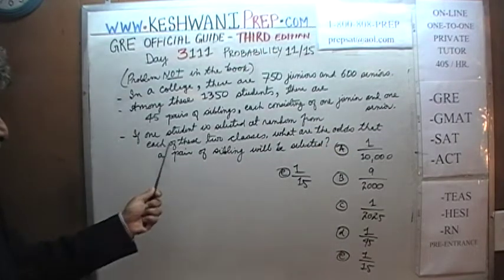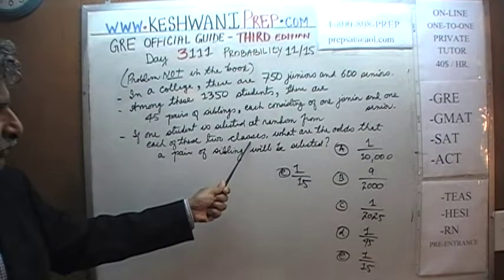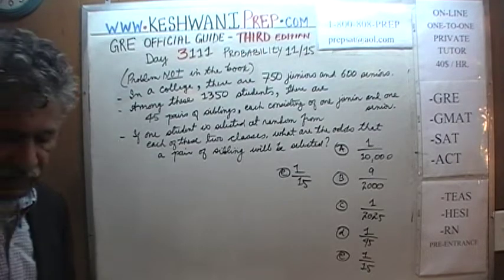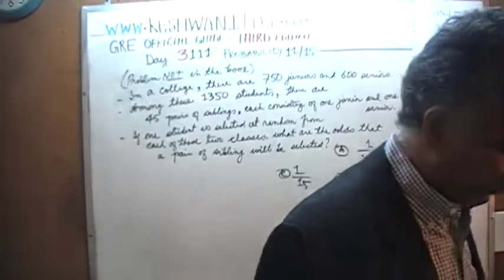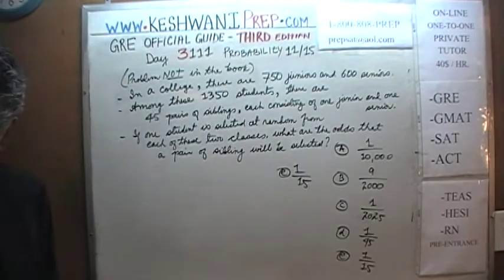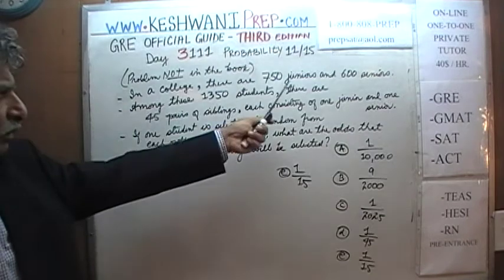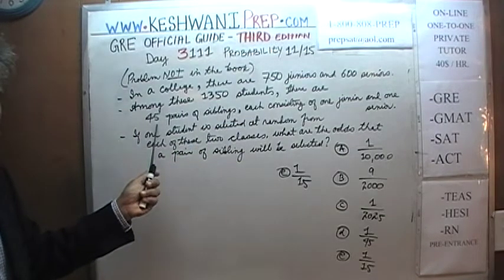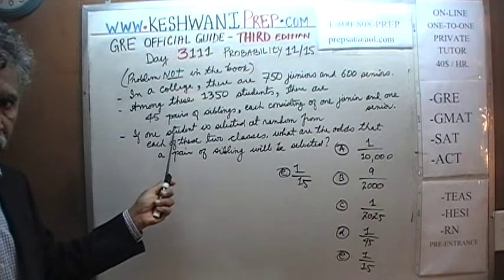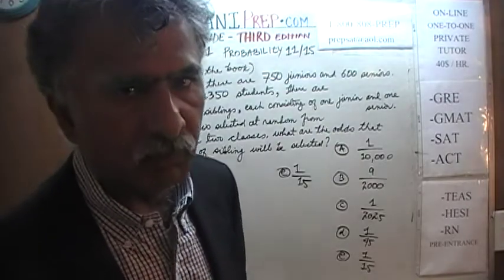The question simply is: if one student is to be selected at random from each of these two classes — one student at random from juniors and one from among the seniors — what are the odds that a pair of siblings would be selected? There are 45 such pairs. I'll give you five seconds now for you to pause the video and do the problem yourself. One more time: there are 750 juniors, 600 seniors, 1,350 students total, with 45 pairs of siblings consisting of one junior and one senior.